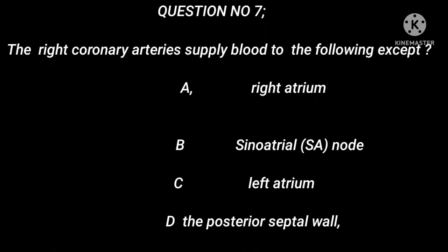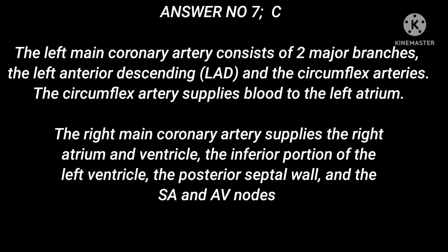Question number 7: The right coronary artery supplies blood to the following except — A. Right atrium. B. Sinoatrial (SA) node. C. Left atrium. D. The posterior septal wall. Answer number 7: C. The left main coronary artery consists of two major branches, the left anterior descending (LAD) and the circumflex arteries. The circumflex artery supplies blood to the left atrium. The right main coronary artery supplies the right atrium and ventricle, the inferior portion of the left ventricle, the posterior septal wall, and the SA and AV nodes.